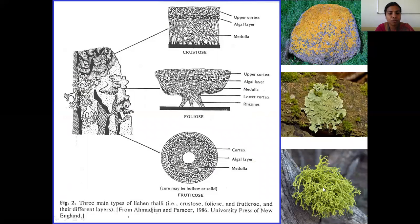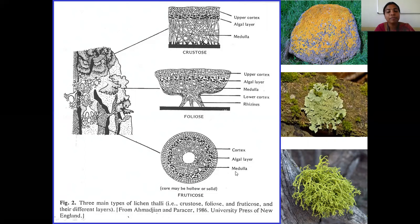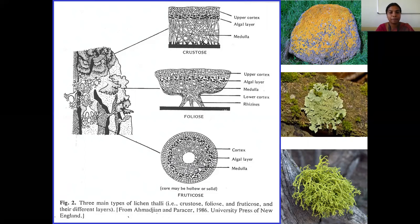The third type is fructicose lichen. There is no upper and lower cortex — it has only a cortex with no differentiation into upper and lower. Simply the cortex region is present in fructicose lichen, and it has a medullary region where the fungal partner is profusely branched and the algal members are trapped inside.